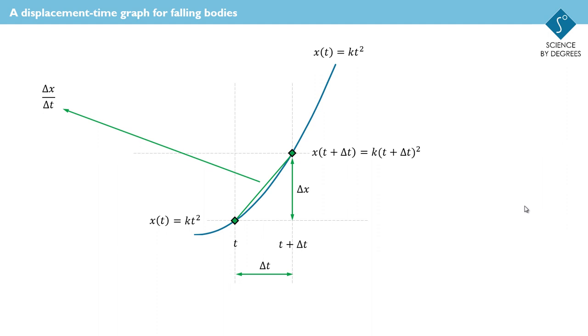So the change in displacement is the displacement at the later time minus the displacement at the earlier time. And we can write that using the function in terms of the time elapsed using these two quantities in here. Again, how does that help?